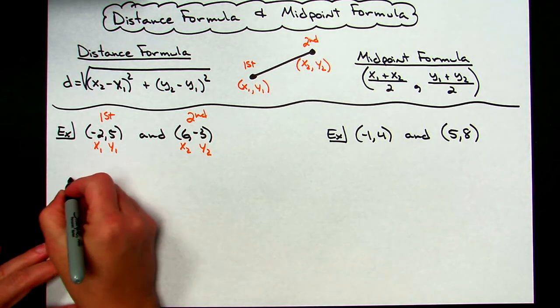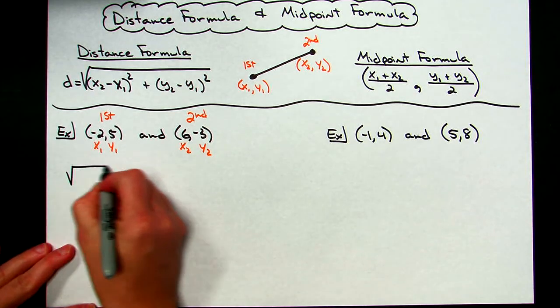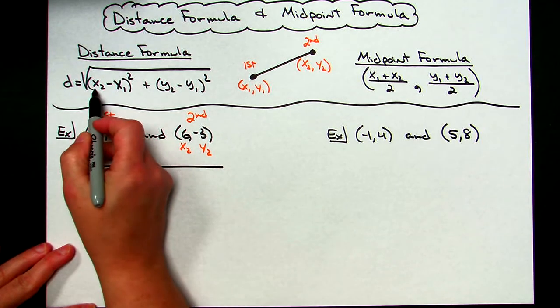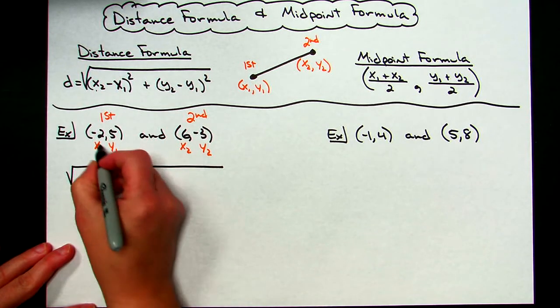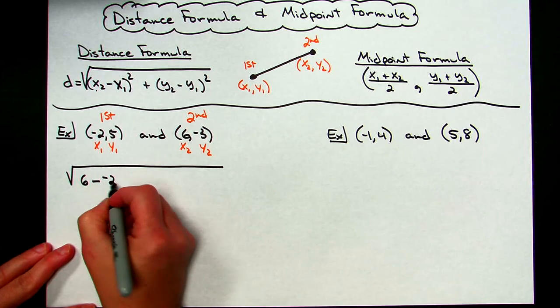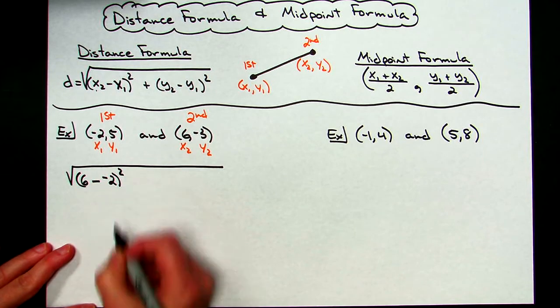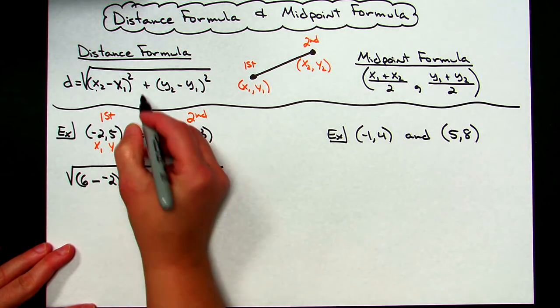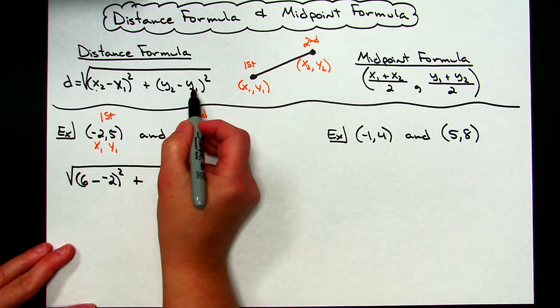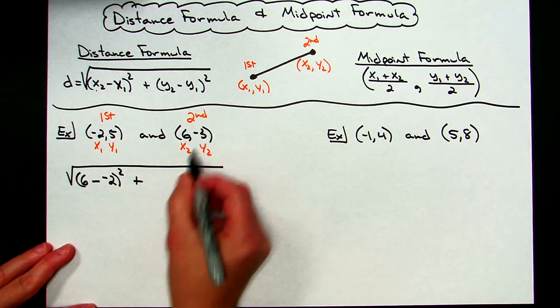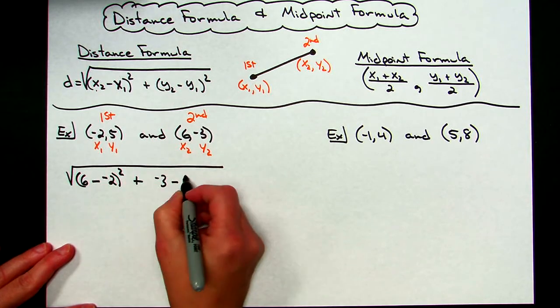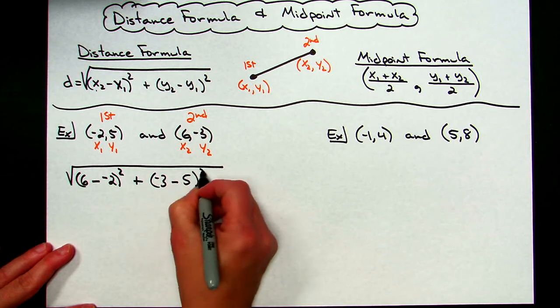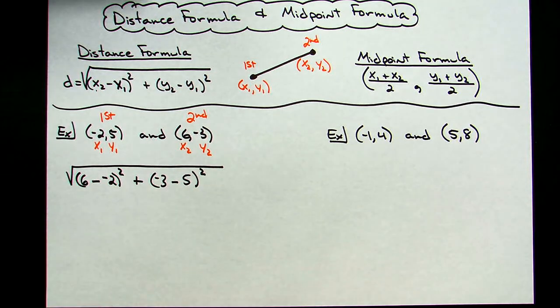So for my distance formula then, I'm going to follow the formula up here. This says x sub 2 minus x sub 1. x sub 2 is 6 minus x sub 1 is negative 2, and then quantity squared plus, now I take y sub 2 minus y sub 1 and square it. So y sub 2 is negative 3 minus y sub 1, which is 5, and then quantity squared. So that first step is no more than just doing a direct substitution of my values.